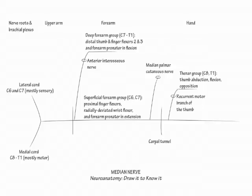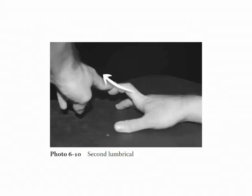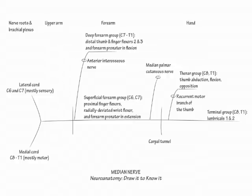The most distal median nerve group is the terminal motor group, which comprises the first and second lumbricals. To demonstrate their actions, extend the proximal interphalangeal joints of your index and middle fingers while you flex their metacarpal phalangeal joints. We have now completed the diagram for motor innervation of the median nerve.